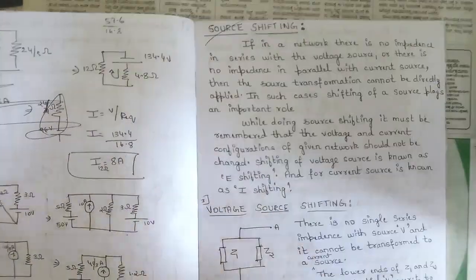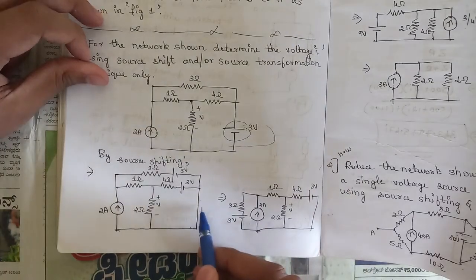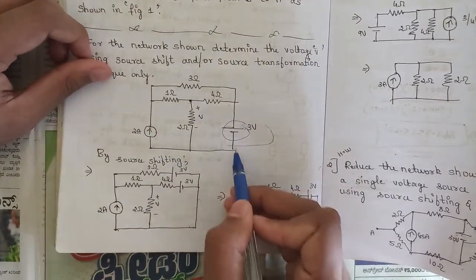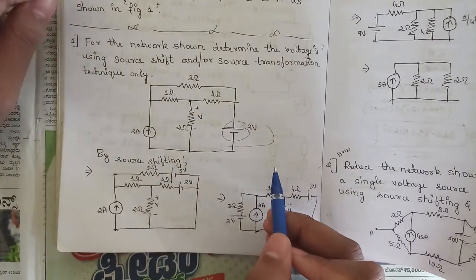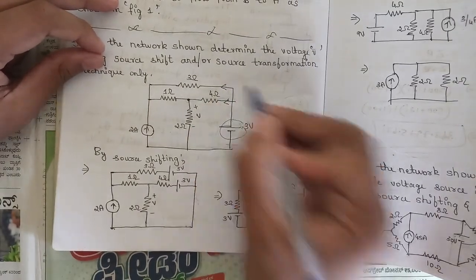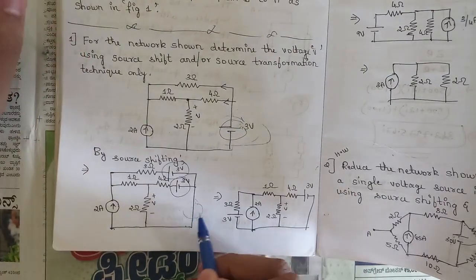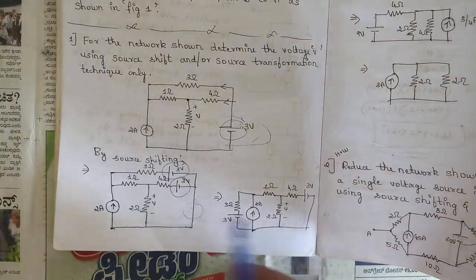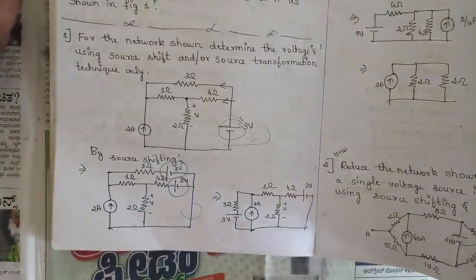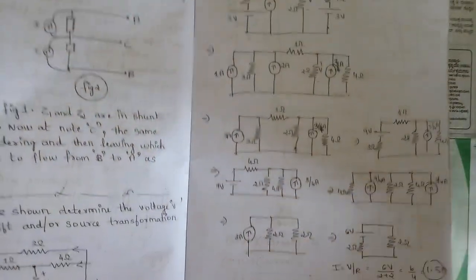One question related to source shifting is a must. In source shifting, a 3-volt source is shifted such that it vanishes from its current position and gets distributed to the two branches it was connected to. This way, by using source shifting, we can reduce the network. They may ask you to use both source shifting and source transformation together to solve the reduction.